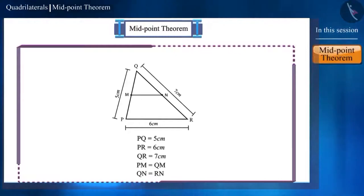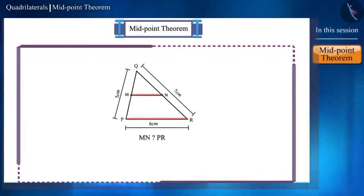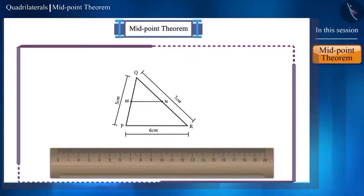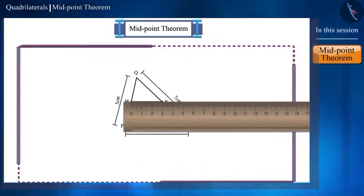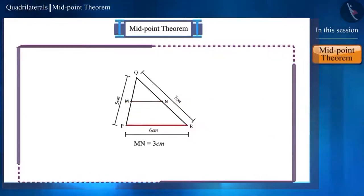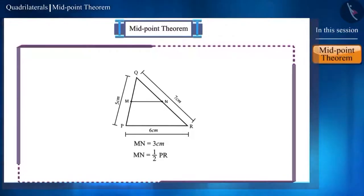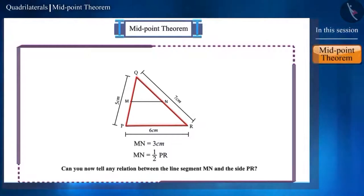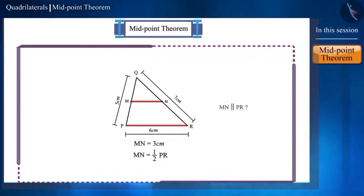Can you now tell any relation between the line segment MN and the side PR? With the help of a scale, find the length of the line segment MN. You can see that the length of the line segment MN is 3 cm, which is half the length of the side PR. Can you tell any other relationship by looking at the figure? Looking at it, both these lines seem to be parallel.